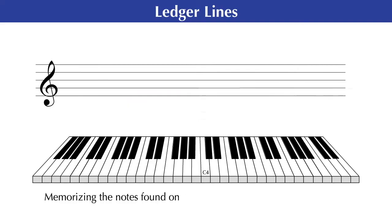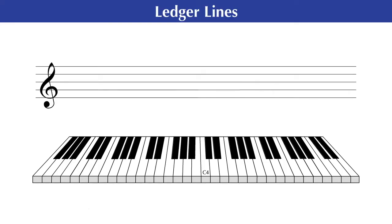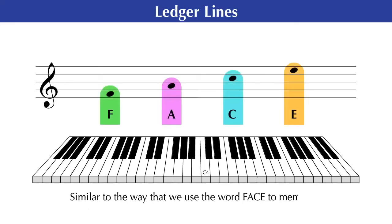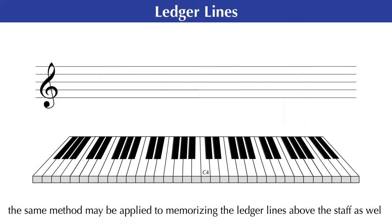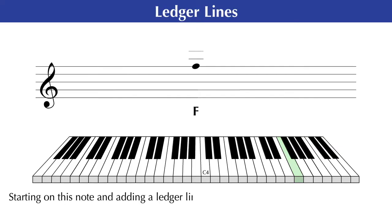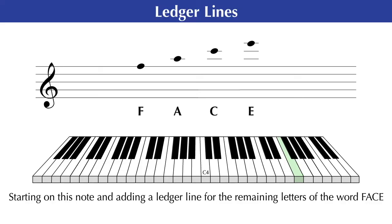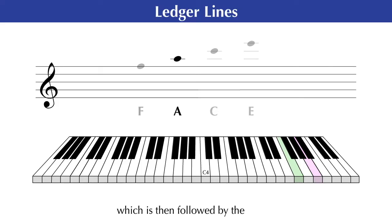Memorizing the notes found on each ledger line above or below either staff can be as easy as memorizing the notes found within the staff. Similar to the way that we use the word FACE to memorize the notes on the spaces of a staff with a treble clef, the same method may be applied to memorizing the ledger lines above the staff as well. We already know that the top line of a staff with a treble clef is the note F. Starting on this note and adding a ledger line for the remaining letters of the word FACE, we can easily see that the first ledger line above the staff is the note A, which is then followed by the note C, which is followed by the note E.